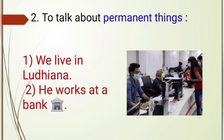We can also use simple present tense to talk about things that are permanent — or more or less always true. For example, 'we live in Ludhiana' — if you live in Ludhiana not for a short time but for a relatively long time, it is a permanent situation. Or 'he works at a bank' means it is his permanent regular job, not a temporary one. So simple present tense is used to talk about permanent things also.